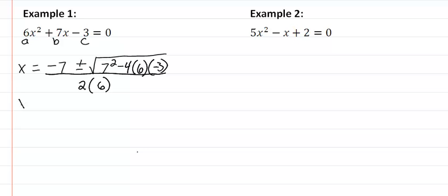Now we're going to throw this in the calculator and we'll get negative seven plus or minus the square root of 121 all over 12. I can simplify the square root of 121. So we're going to get negative seven plus or minus 11 all over 12.